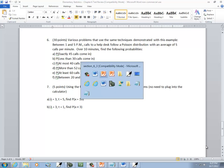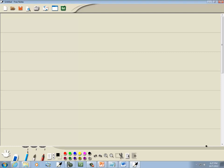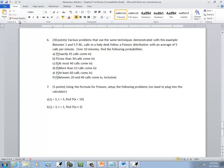Let's take a look at number six. It says various problems, you'll know how to do various problems using the same technique demonstrated with this example. Between one and five calls to a help desk follow a Poisson distribution with an average of five calls per minute.